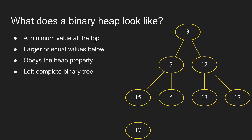So what does a binary heap look like? It's a left complete binary tree, which means that all of the rows are filled with nodes except for the bottommost row, which has to be filled from left to right with no holes. Child nodes must have a value which is larger than or equal to the values in their parent. This is called the heap property.